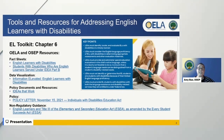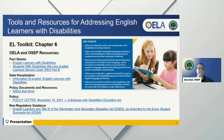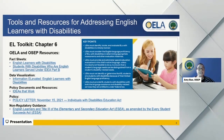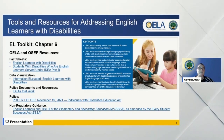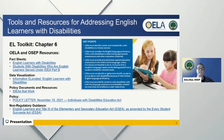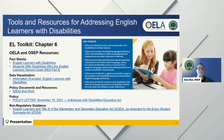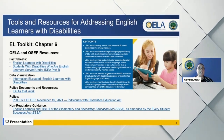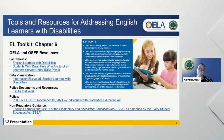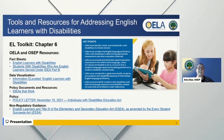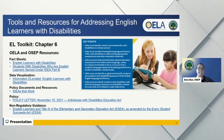The non-regulatory Title 3 guidance provides states and LEAs with information to assist them in meeting their obligations under Title 3 of the ESEA to provide supplementary services to English learners, immigrant children and youth, and their families, including serving English learners with disabilities. This guidance also provides the public with information about their rights under this and other relevant laws. These resources can be accessed through the OELA or OSEP websites and through all the links on this page.